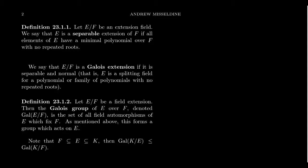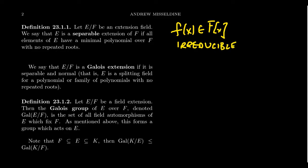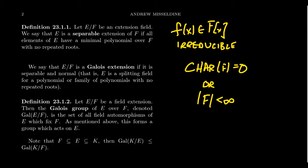The good news is that if F of X is some irreducible polynomial — and minimal polynomials are by definition irreducible — then if F of X is irreducible over a field of characteristic zero, or if it's a finite field, then the extensions will always be separable.